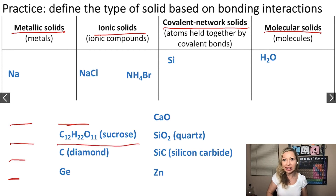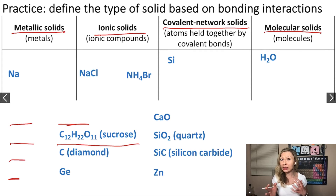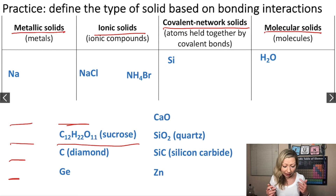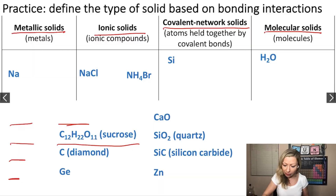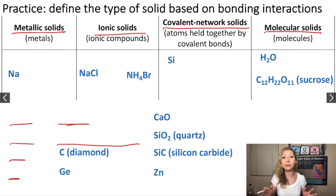Let's take a look at the next one — sucrose. What is it? It's sugar. Is it a molecular solid or a covalent network solid? Well, it seems to me that it's composed of non-metals and large molecules, so this should be a molecular solid.